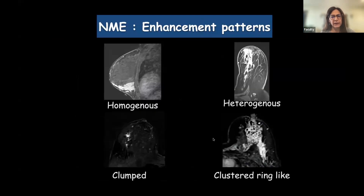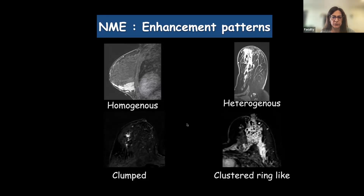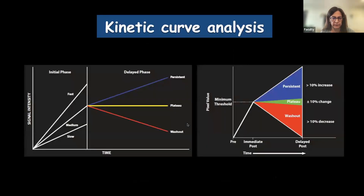Like masses, in non-mass enhancement we also look at the internal enhancement pattern, which can be homogeneous, heterogeneous, clumped, or clustered ring-like. Homogeneous can be seen in benign conditions; the remaining three are normally seen in malignancies. However, in a country like ours, clustered ring-like enhancement is also seen in cases of tuberculosis.